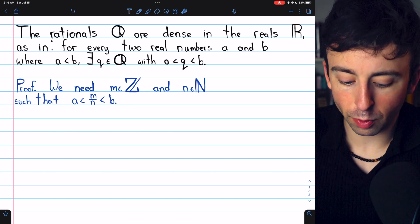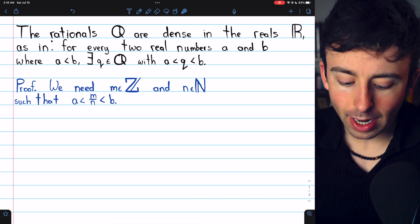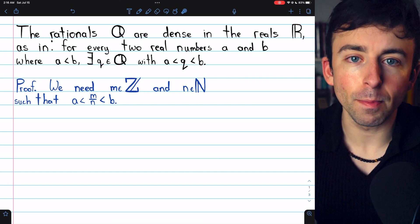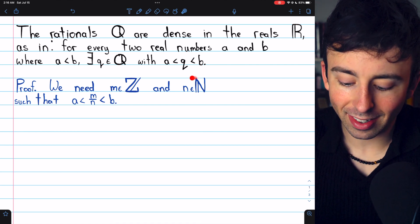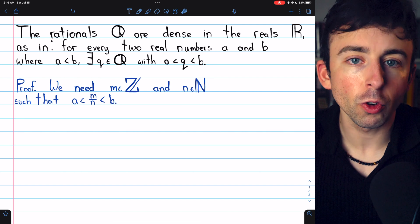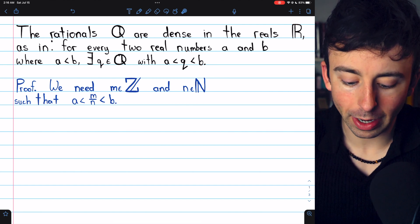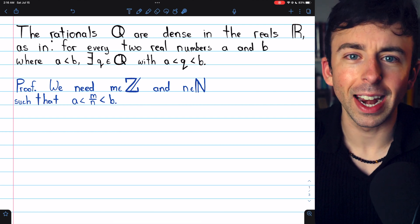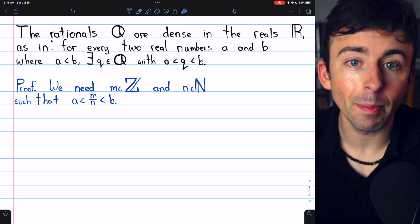Now, for this proof, we're going to need to find a rational number, M over N, that's between the arbitrary real numbers A and B. We'll say that M is an integer and N is a natural number. If the rational number is zero or negative, then the numerator can be zero or negative, so the denominator can just be a natural number. But we need to find an M and N that are going to make this work.